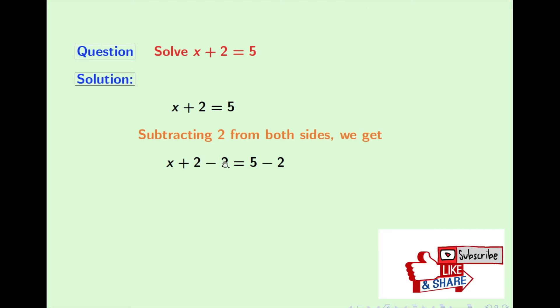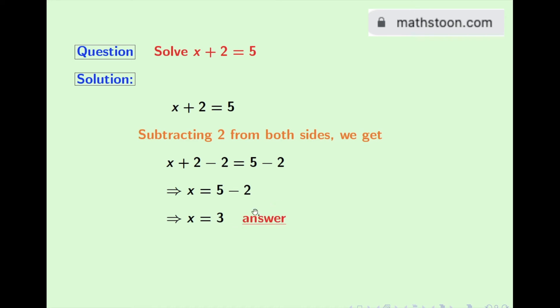Simplifying the left hand side, we get x. And in the right hand side, we get 5 minus 2. As 5 minus 2 is 3, finally we get x is equal to 3. And this comes out as our final answer.